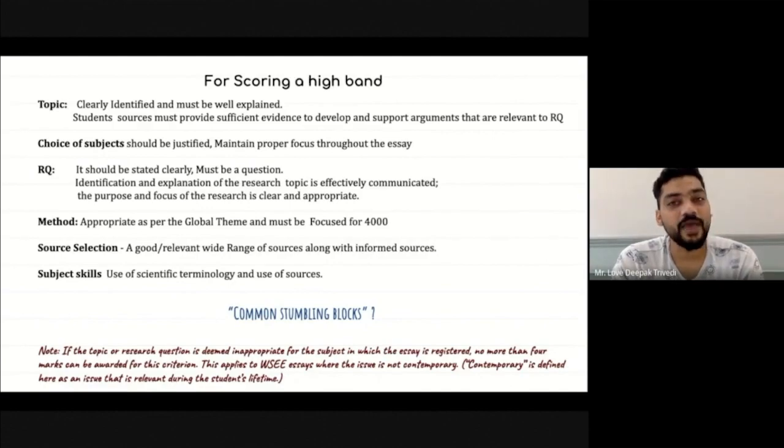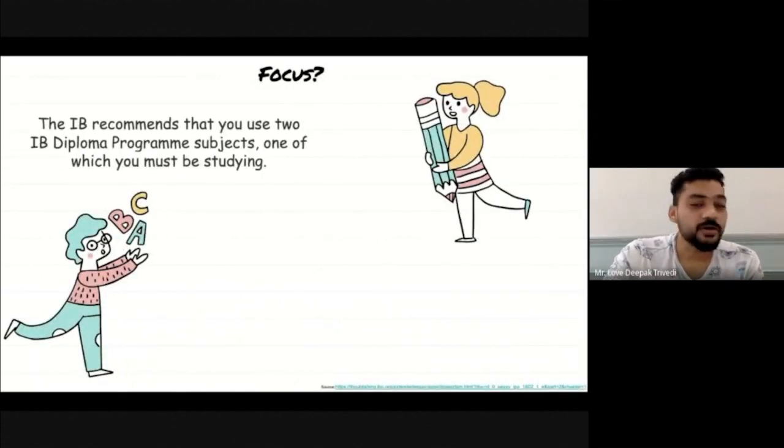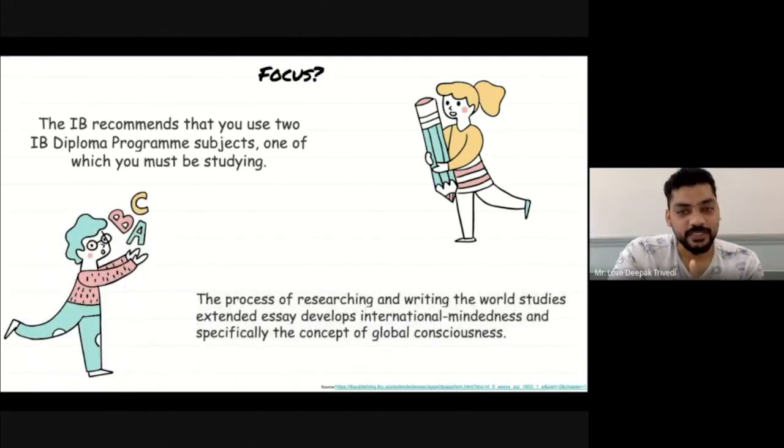If I am doing physics and bio together, one of the subjects should be my subject that I am pursuing at my DP level. There are many stumbling blocks that also we can discover or discuss. When I talk about the focus of world studies extended essay, you choose two subjects, one of which you must be studying.